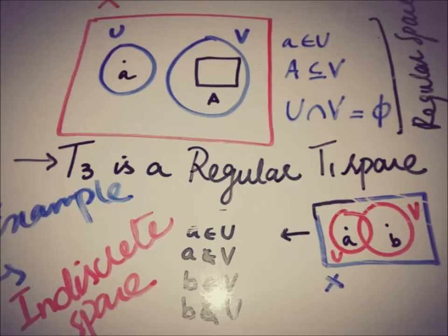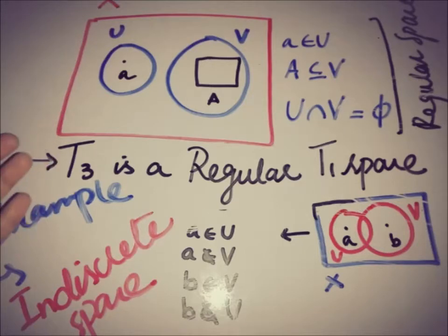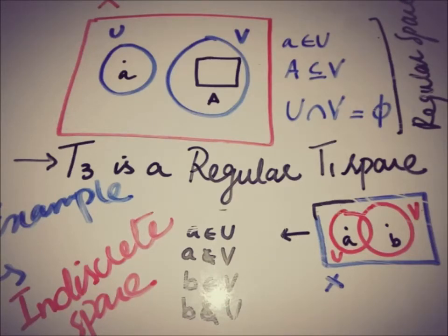A T3 space is a regular T1 space, and a regular space is a space that separates a closed set and a point by two distinct open sets. If you are looking for more such videos, you can subscribe to this channel and watch more upcoming videos. We will meet you in the next video — till then, take care, goodbye.